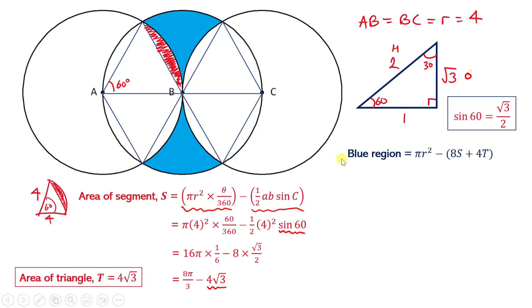So we can say the blue region is just the area of the circle πr² minus the sum of the 8 segments and the 4 triangles. So we can try and work out 8S and 4T. We know what r is. r is 4, so it's just going to be 16π. So now, to work out 8S and 4T, 8S is just 8 times this value over here. 8 times your segment, which is going to be 64π/3 - 32√3.